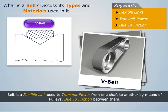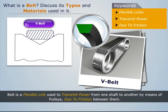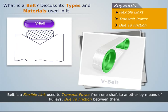V belt: Its cross-section is trapezoidal in shape. It is mostly used in factories and workshops where moderate power is to be transmitted from one pulley to another, and the pulleys are very near to each other.